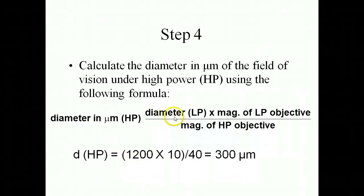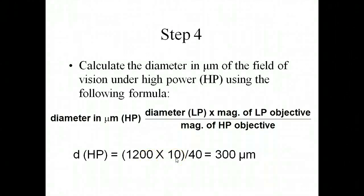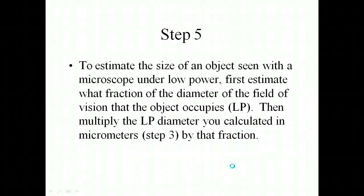To plug in our numbers, we know that the diameter of our low power objective was 1,200 microns. We just calculated that, or measured that with our ruler, times the magnification of our low power lens, which is 10, and we divide it by the magnification of our high power objective lens, which is 40. So 12 times 10 is 12,000 divided by 40 gives us a field of view under high power of 300 micrometers. Remember, this is an example that is teaching you how to use the microscope to make measurements. Our numbers that we're going to use in class are very different than these.